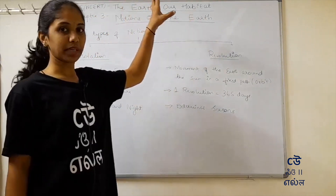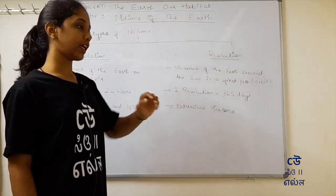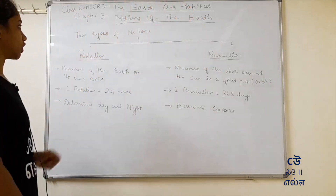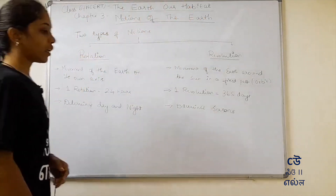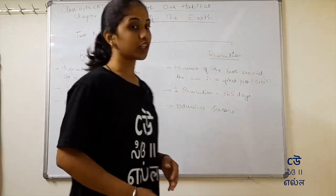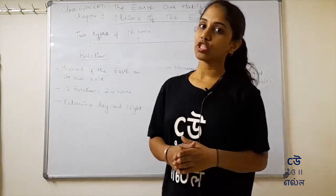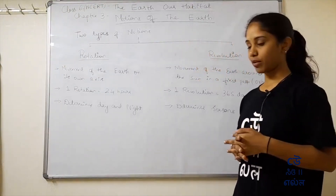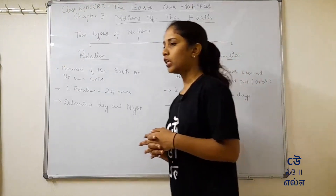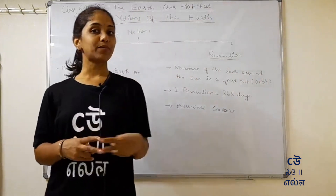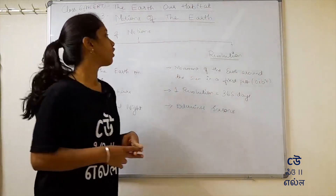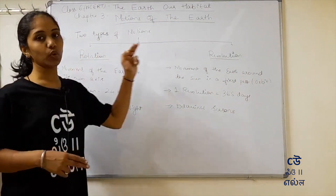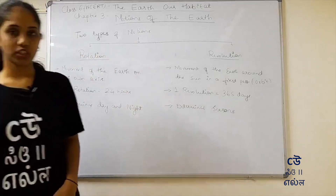This chapter is not NCERT-based. In this chapter on Motions of the Earth, we have previously covered the first and second chapters. There are two types of motions: one is Rotation, and two is Revolution.